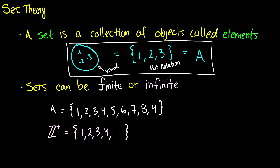Now sets can be finite or they can be infinite. So we can have a set A containing all the numbers between one and nine, or we could have the set of positive integers that go from one all the way up to infinity — and in this case this is an infinite set. These dot-dot-dots mean there's an implied pattern that just goes on forever. So in Z+, if we have one, two, three, four and we put dot-dot-dot, we mean it goes five, six, seven, eight, nine, ten, and so on.